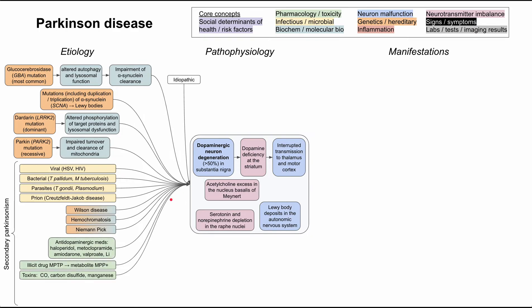Pharmacologic and toxic etiologies include mostly anti-dopaminergic medications such as haloperidol and other first-generation antipsychotics, metoclopramide, amiodarone, valproate, and lithium. The illicit drug MPTP breaks down into the metabolite MPP+, which can cause Parkinsonism. Workplace toxins including carbon monoxide, carbon disulfide, and manganese can all cause Parkinsonism as well.